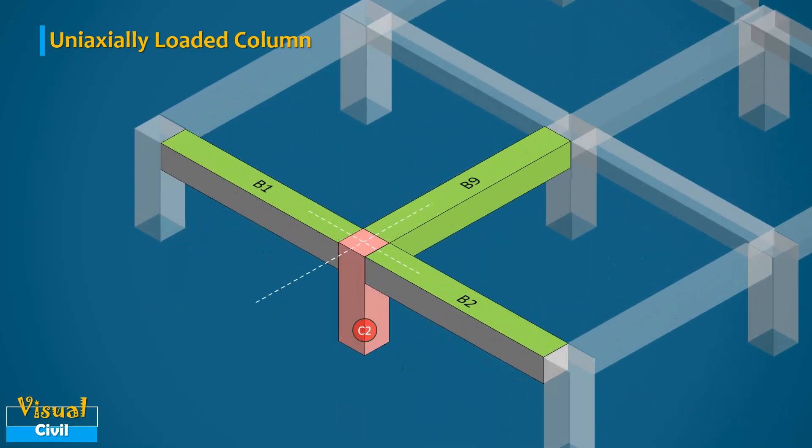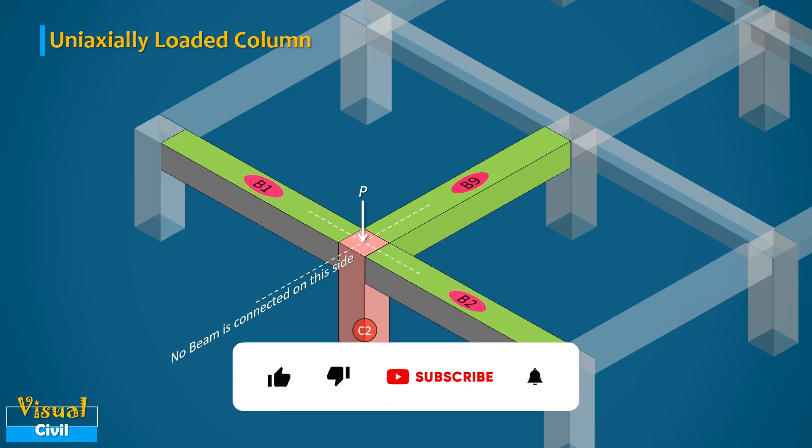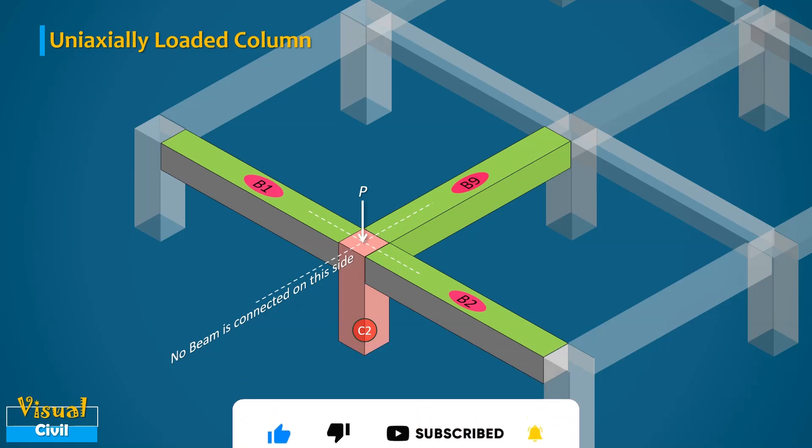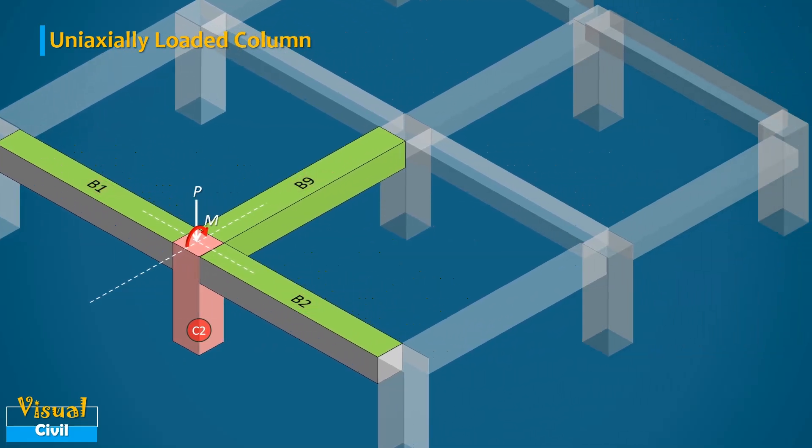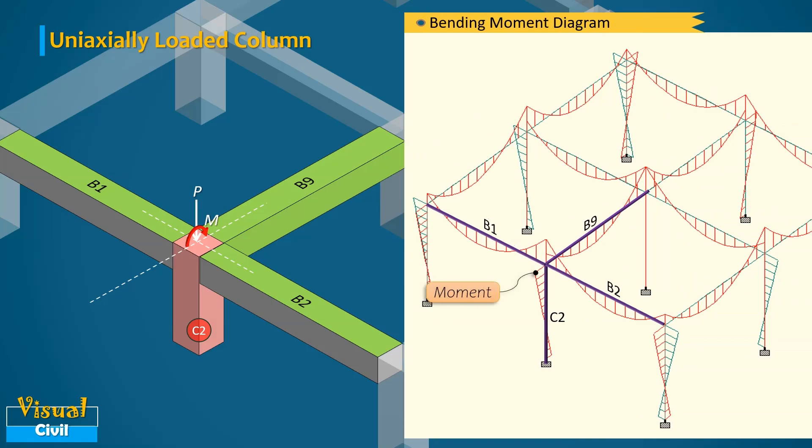The beam B1 and B2 with same span are connected along the same axis but on opposite side of the column. Therefore, the effect of the moment on column C4 due to beam B1 and B2 will be zero. But on the other side of the column, only beam B9 is connected and no beam is on opposite side to balance the moment caused by beam B9. Hence, moment will act on the column due to B9 along the beam line. This we can verify in bending moment diagram computed using STATPRO software.